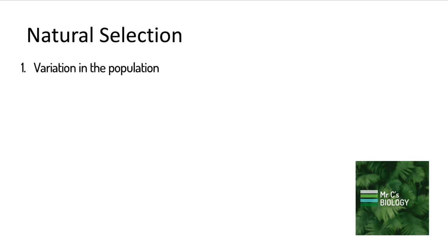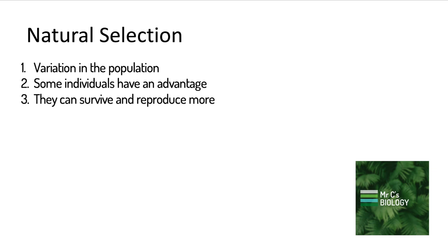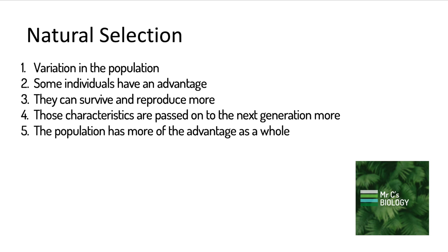If there's variation, then some of them will have an advantage and some of them won't. If they have an advantage, they're going to be able to survive and reproduce more. And if they survive and reproduce more, that means that the characteristics that they have, in this case, whether they're slightly lighter or slightly darker, they're going to be passed on more to the next generation. And if they're passed on to the next generation more, then the whole population, in this case of moths, has the advantage more.